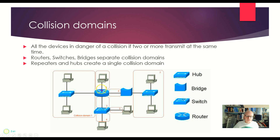Here's a router port, so this is in its own collision domain. Between the router and the switch I've got a line that's its own collision domain. Off of the switch, each port is its own collision domain — here's one, here's another one. Here's the link between a switch and a bridge — these two do separate collision domains. And then over here there's a hub, which does not separate collision domains, so everything off of this bridge port is one collision domain.